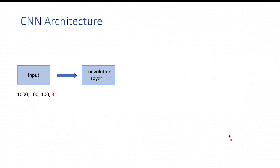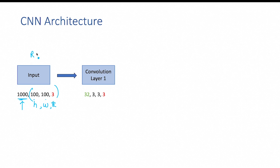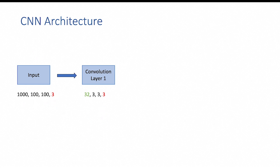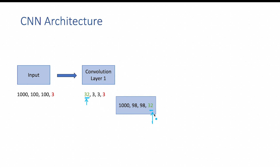Now let's get back to the CNN architecture we have been discussing. We are considering 1000 different input images, each of shape 100 by 100 by 3, where 100 by 100 represents height and width, and 3 represents the number of channels — so this is RGB image data. The kernel also has a depth equivalent to the number of channels. We are considering 32 three-dimensional kernels. For each kernel, there is a corresponding feature map, so convolutional layer 1 generates 32 different feature maps as output.